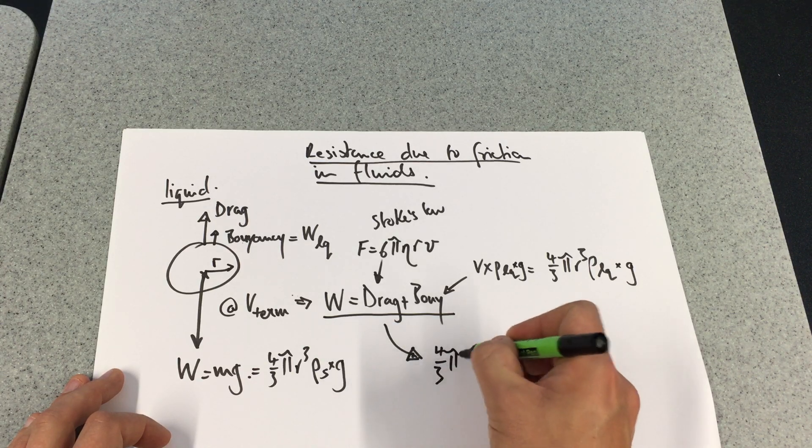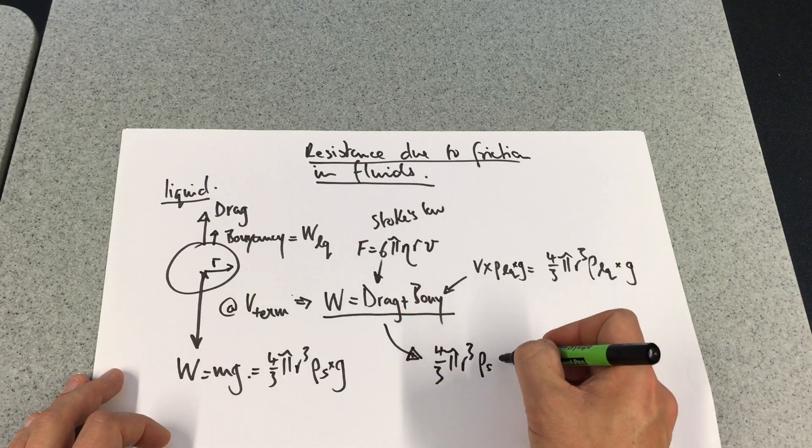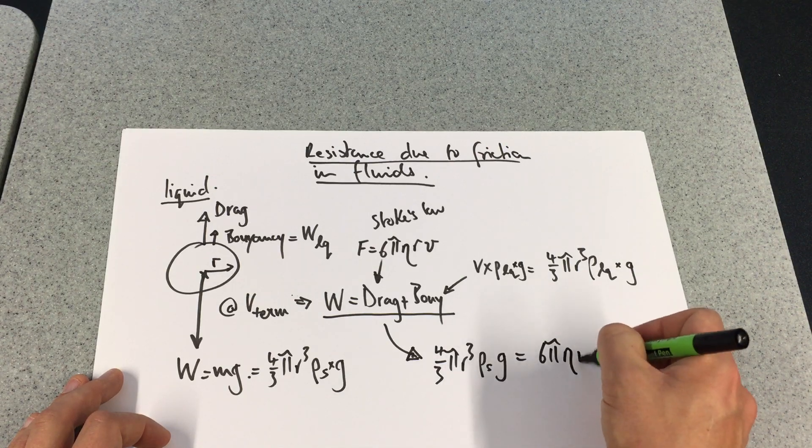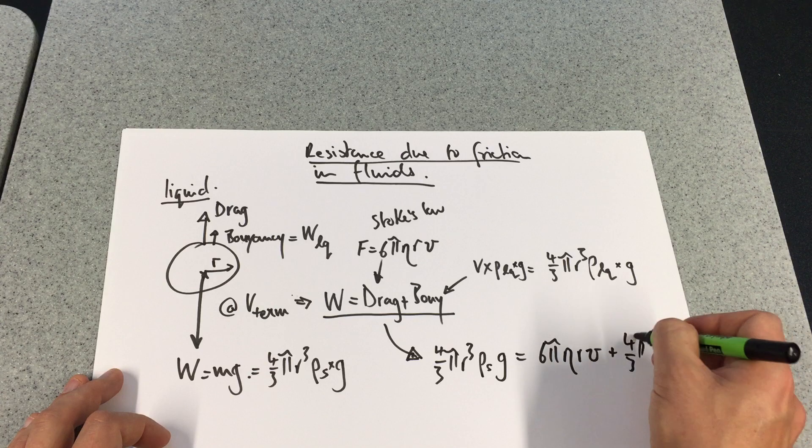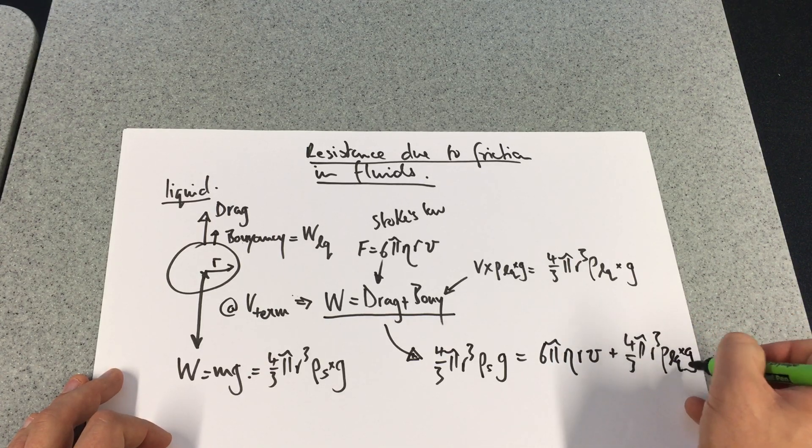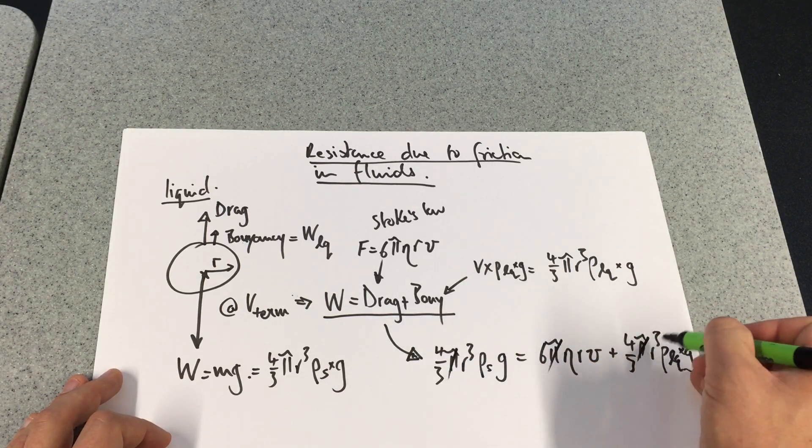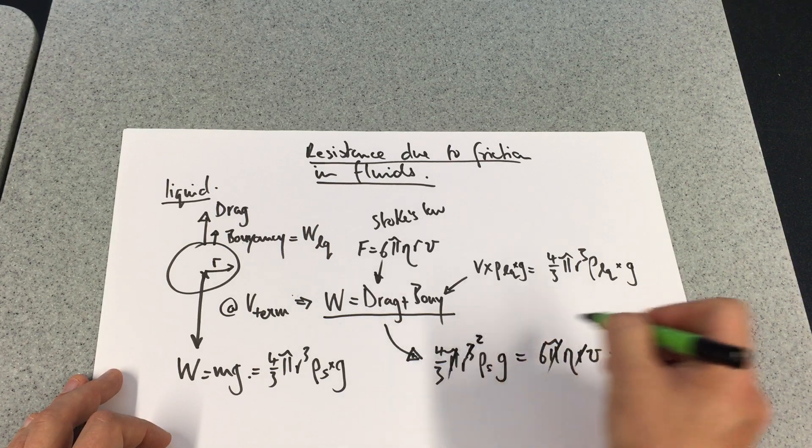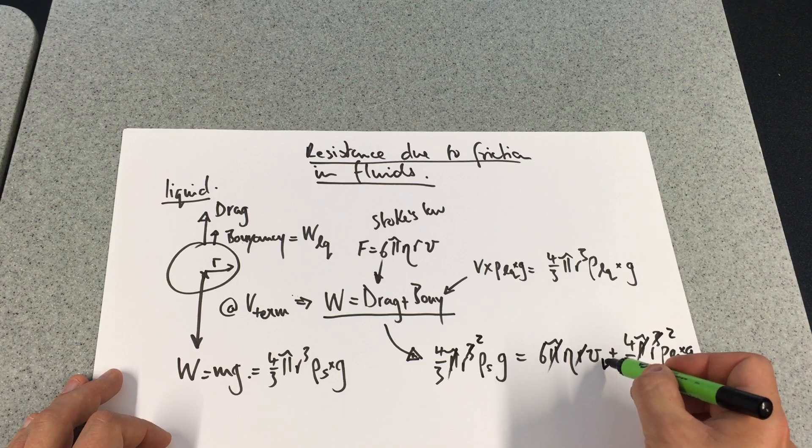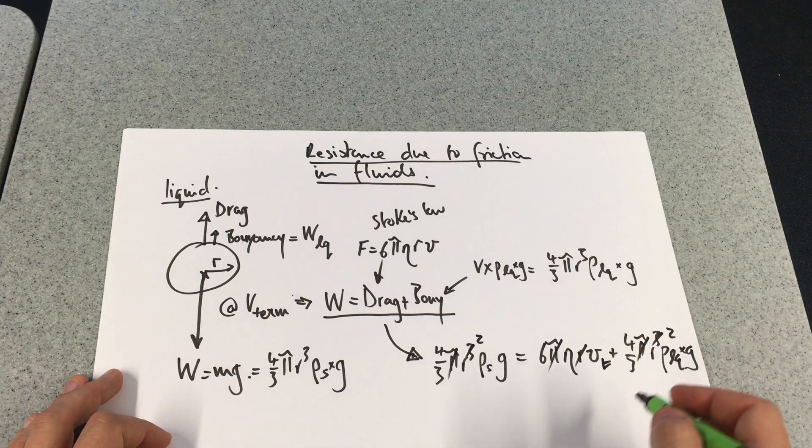Therefore, 4/3πr³ density of the steel ball times g will equal 6πνrv plus 4/3πr³ density of the liquid by g. We can get rid of one r throughout, and that's going to be a terminal velocity when this is balanced.